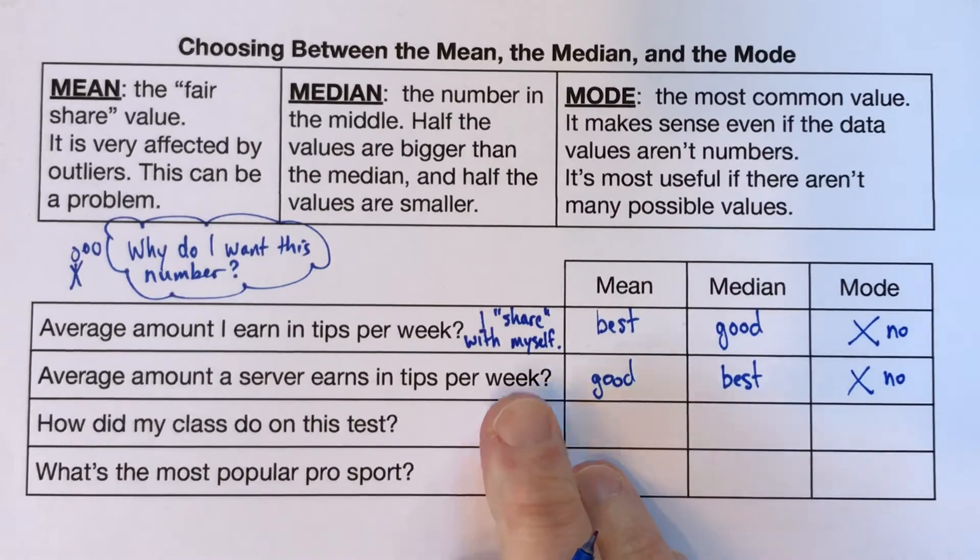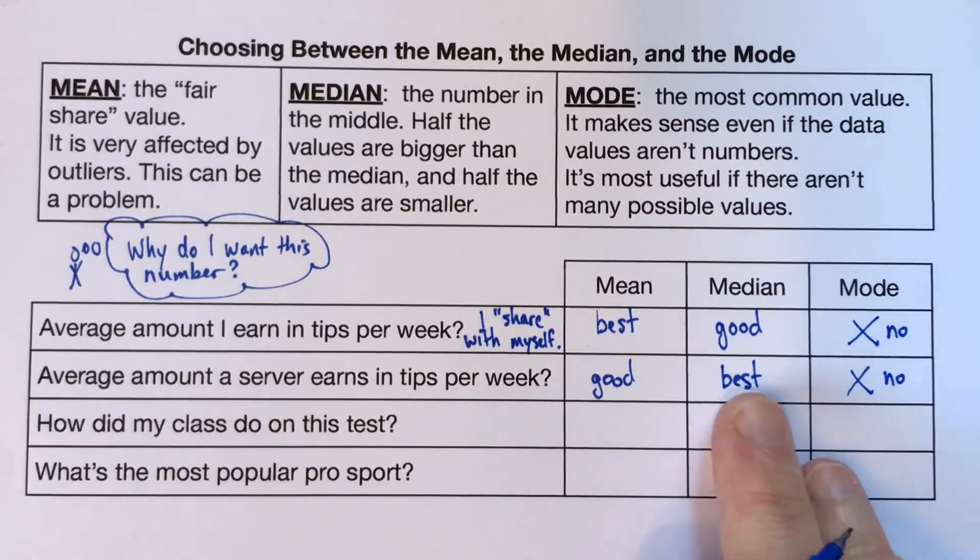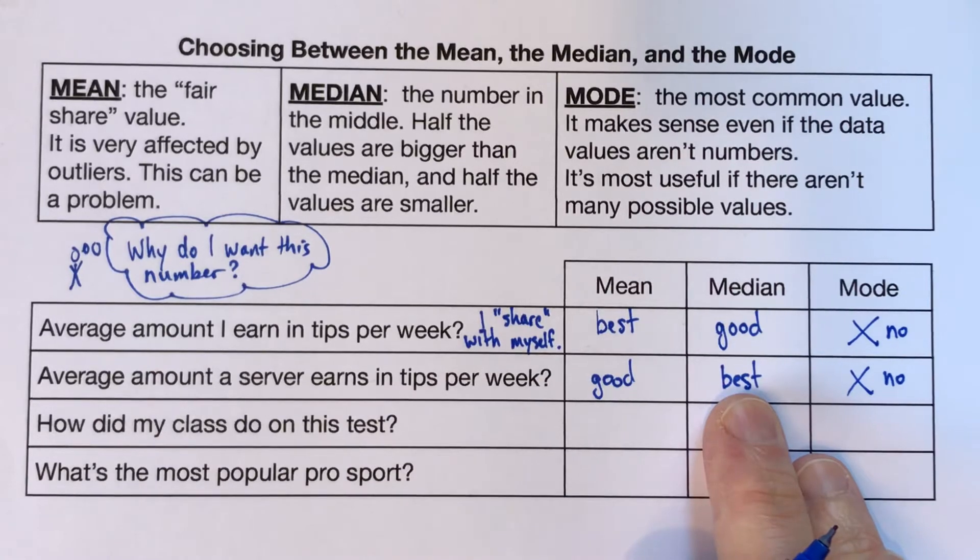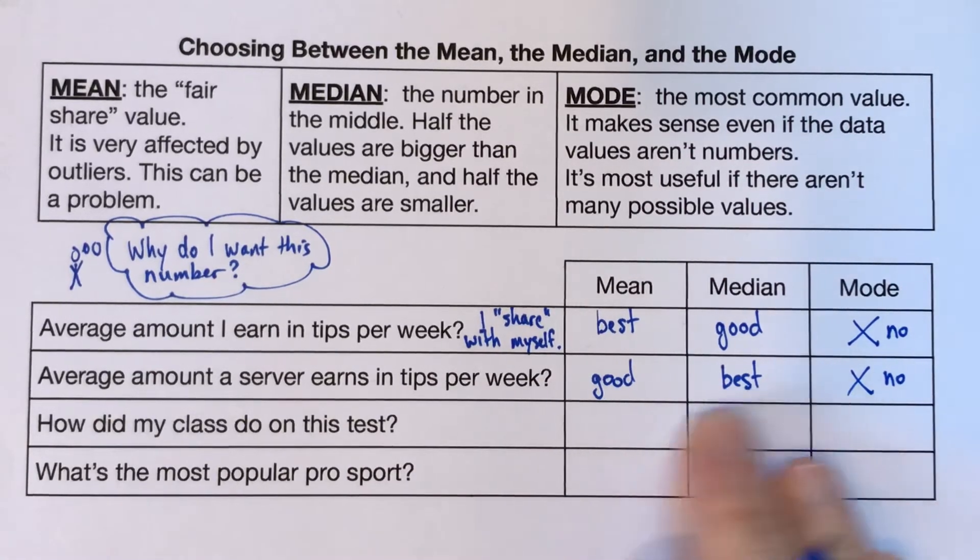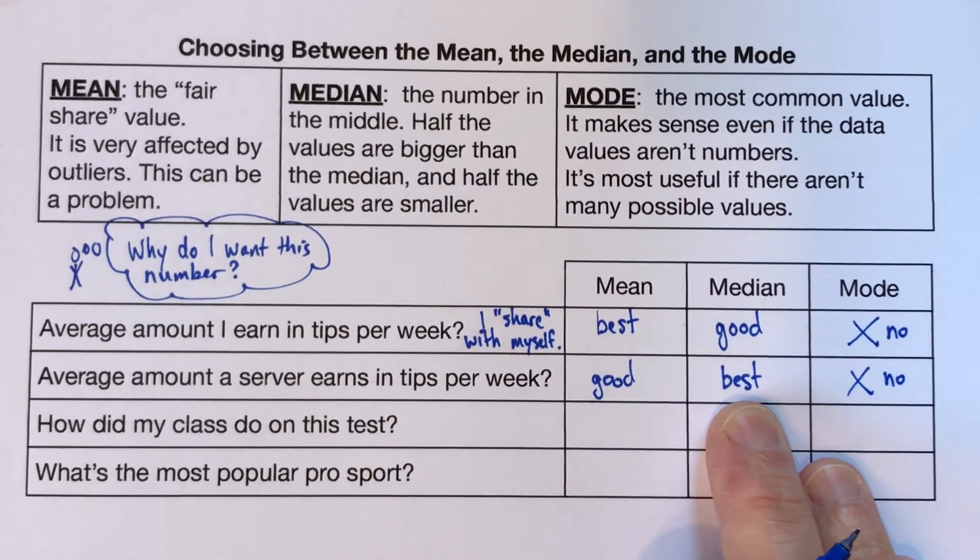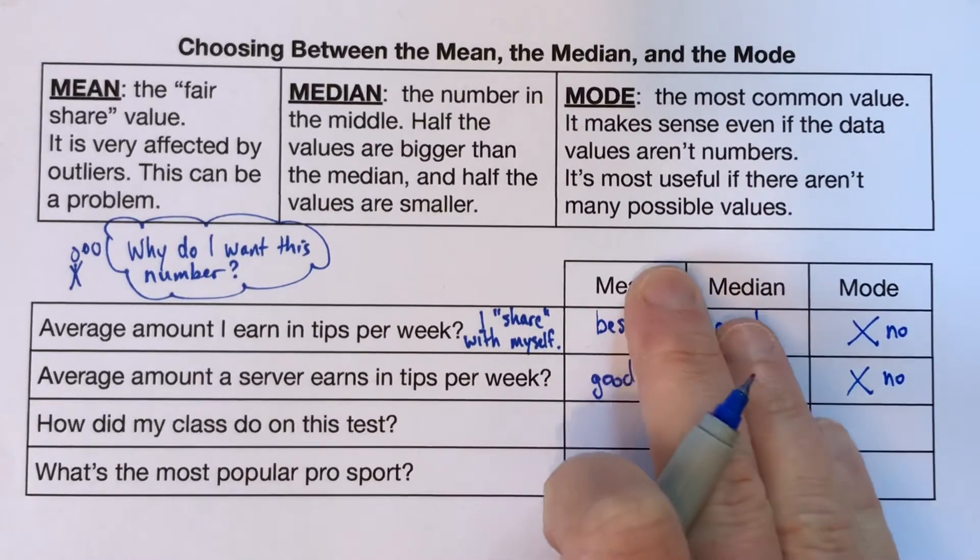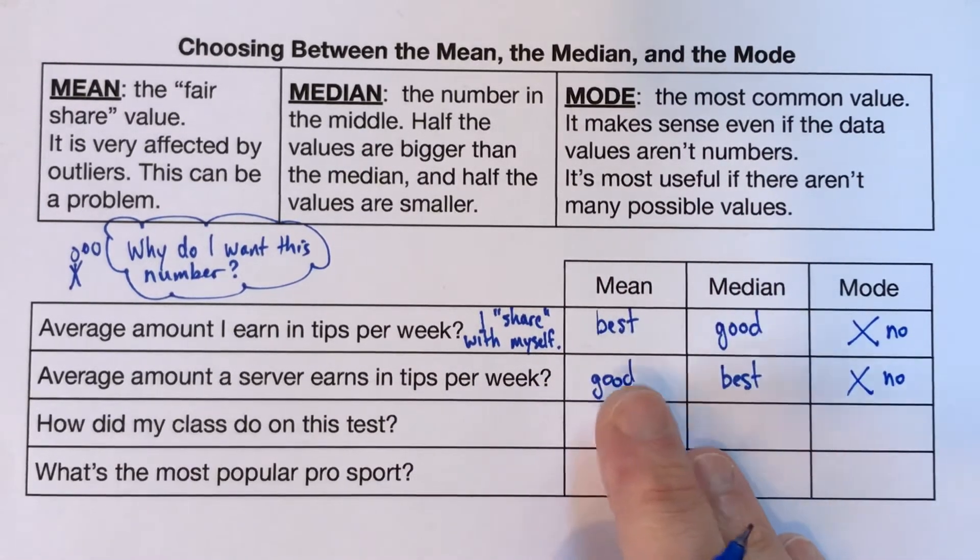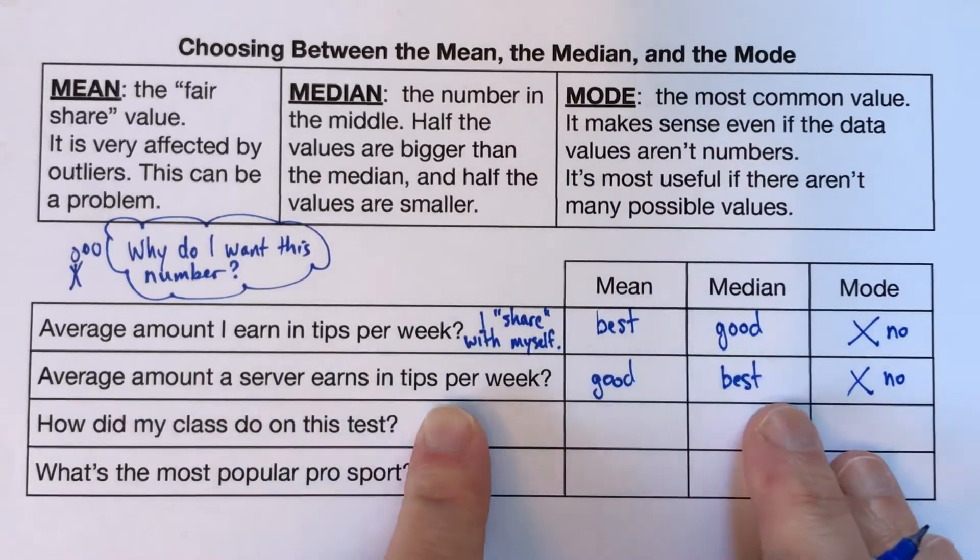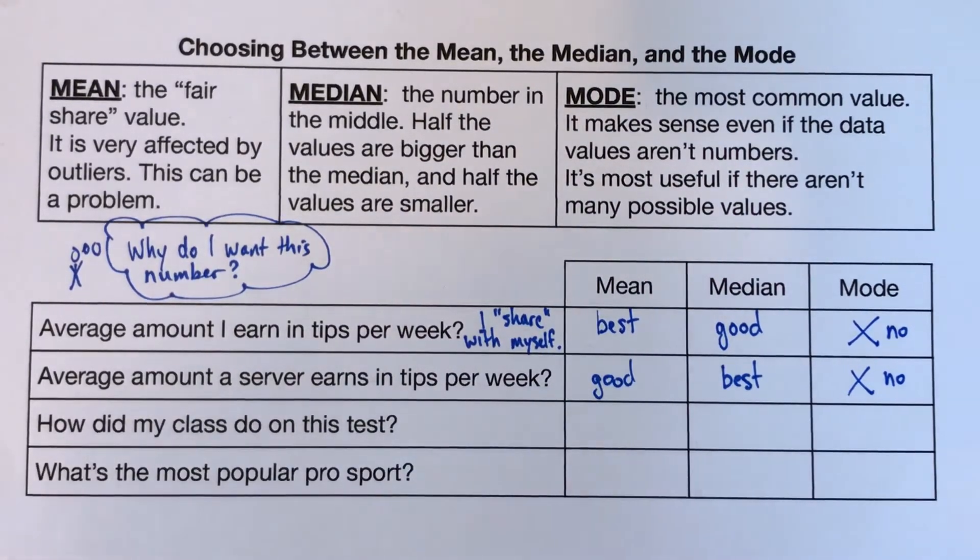But usually the servers might not share with each other. In which case, I think the median, just the number that's sort of halfway, well, half the people earn more and half the people earn less, that might be the best representation of how much they earn. Now, of course, if it's a restaurant where everybody pools the tips, then the mean would actually be the amount that everybody makes. That would be the fair share value. So I guess for this question, we're assuming that the servers are not sharing.